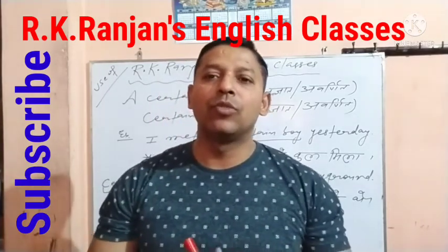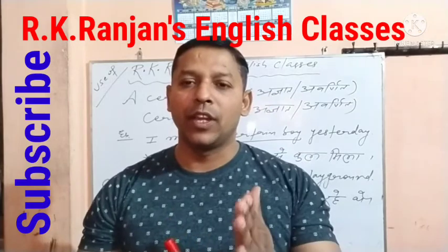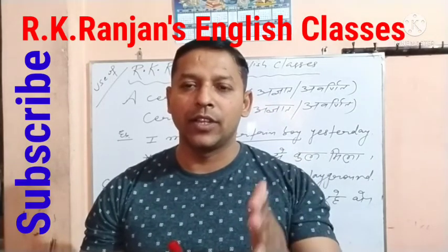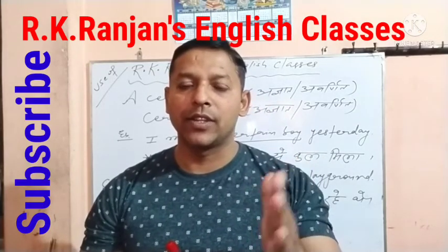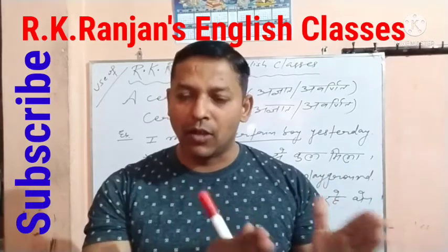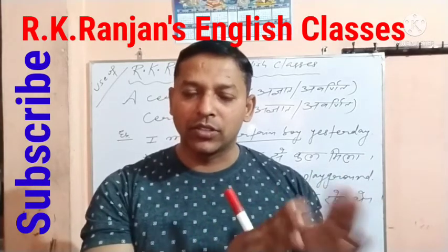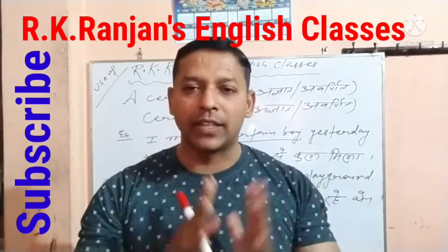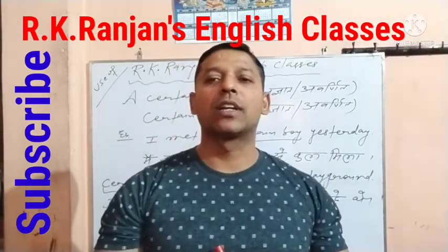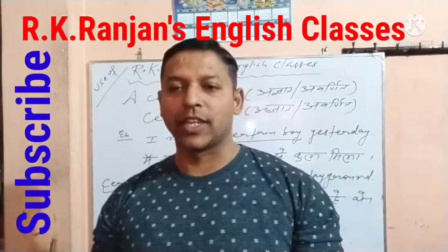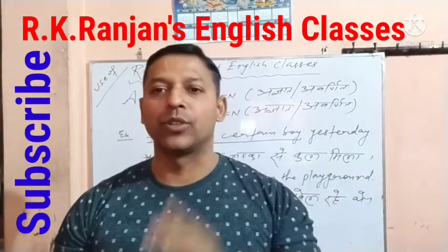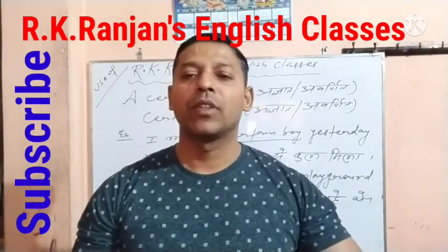Singular countable noun में आते हैं: a boy, a girl, a chair, a table, a cow, an ox, etc. आप जानते हैं singular countable noun किसे कहते हैं — जो एक हो और जिसकी गिनती हो सके।